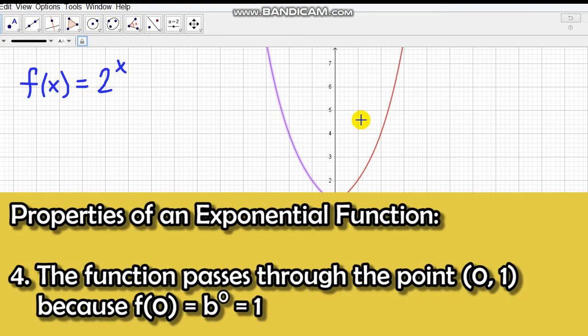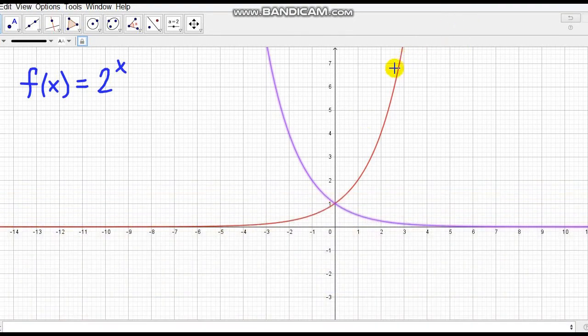Number 4, the function passes through the point (0, 1). As we can see, f(x) = 2^x and f(x) = (1/2)^x both pass through (0, 1). Because if x is 0, then we'll have 2^0, which equals 1. So it passes through at this point.